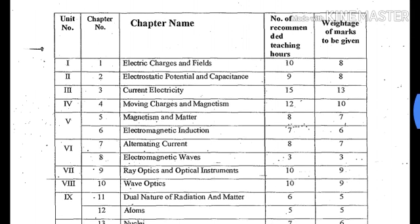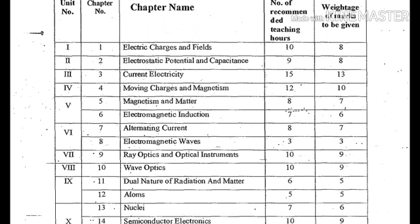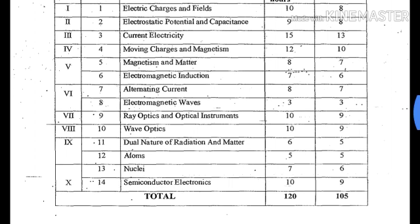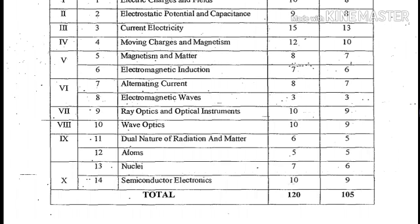Electrical charge and field: teaching marks is 8. Electrostatic charge capacity is 8. Current IC rate is 13, and it is 8. Magnetic is 7, and matter is 7. Electromagnetic induction is 6.